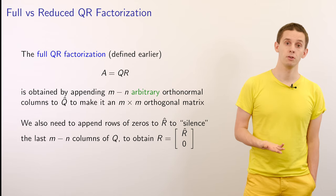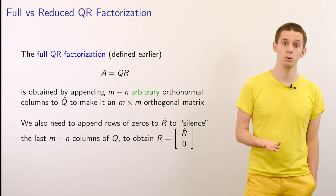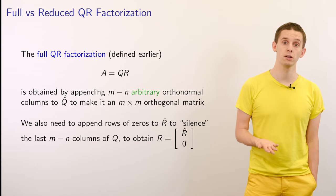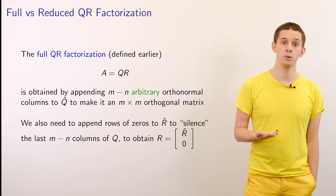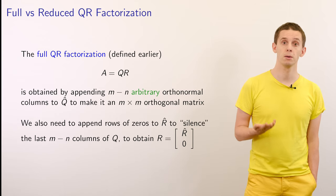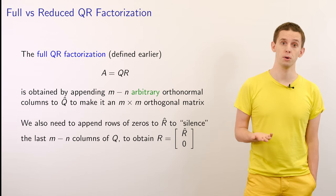We also need to add rows to R̂ to silence the effect of those extra columns during matrix multiplication. Therefore our factor R is formed from the upper triangular matrix R̂ padded with the additional m minus n rows of zeros.